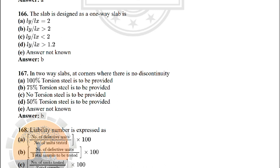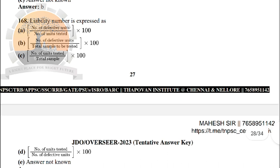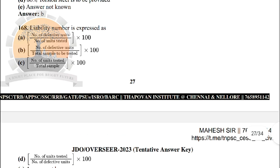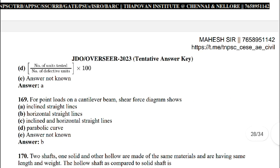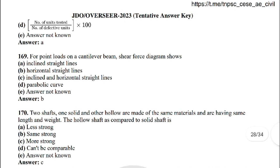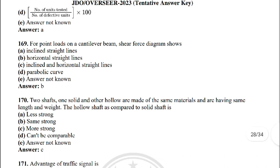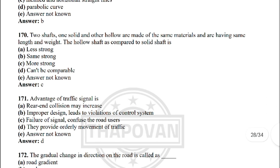Next: liability number is expressed as — the correct answer is option A: (number of defective items / number of units tested) × 100. Next: for point loads on a cantilever beam, the SFD (shear force diagram) shows — the correct answer is option B: horizontal straight lines.